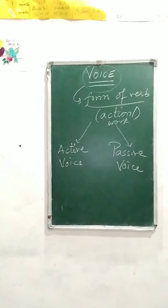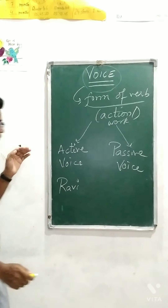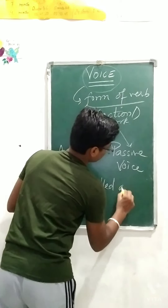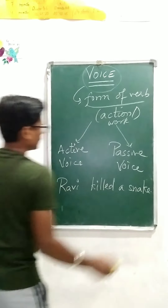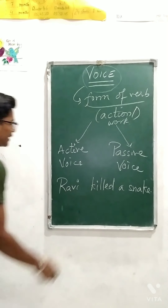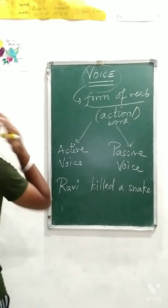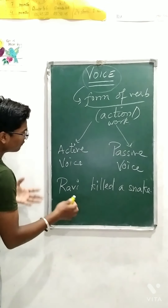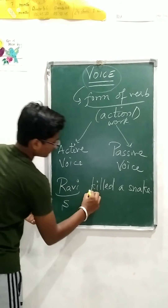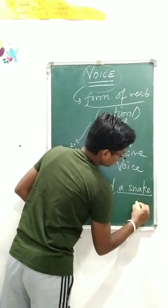Let me take one example: 'Ravi killed a snake.' Now, when we started verbs and sentences, I told you what is subject and what is object. So here, 'Ravi' is the subject, 'killed' is the verb, and whatever comes after the verb — that is 'a snake' — is the object.